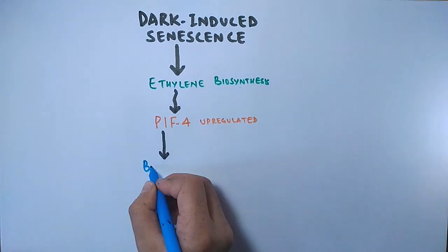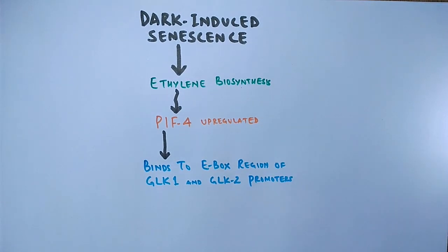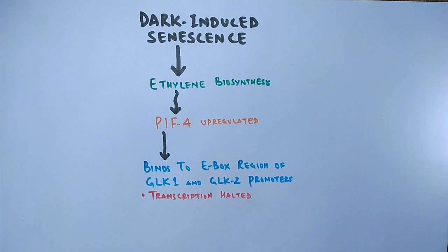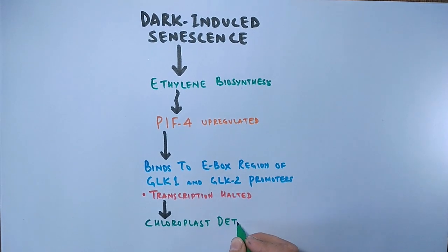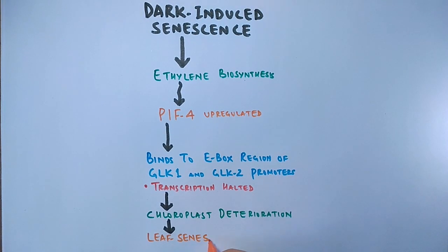We see PIF4 binds to E-box region of transcription factors like GLK1 and GLK2, promoters are getting inhibited. So when GLK1 and GLK2 promoters are getting inhibited and their transcription is halted, with which the GLK genes remain unexpressed, which leads to chloroplast deterioration also. That results in photosynthesis inhibition and leaf senescence.